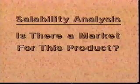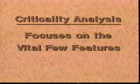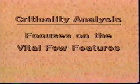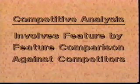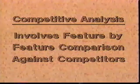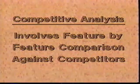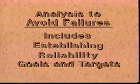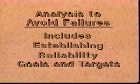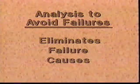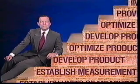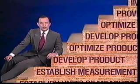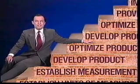This session addressed four principal tools for analyzing product features. Saleability analysis seeks answers to the question: is there a market for this product? Criticality analysis focuses on the vital few product features so they may receive priority attention. Competitive analysis involves feature-by-feature comparison of your product against competitors, with the purpose of planning a strong competitive quality position into your product. Analysis to avoid failures includes establishing goals and targets for product reliability and availability, and examining previous product performance information to eliminate failure causes. Once the product features are established, there is a need to establish an optimum goal for each feature. Optimizing the product design is the subject of the next session.